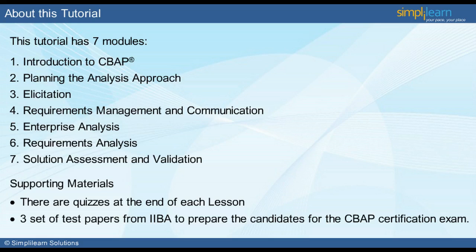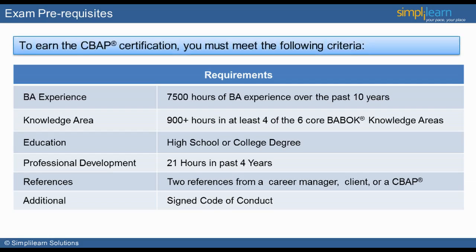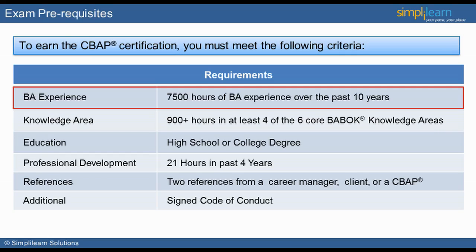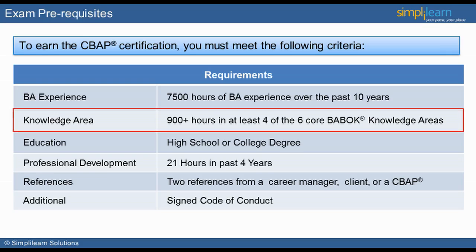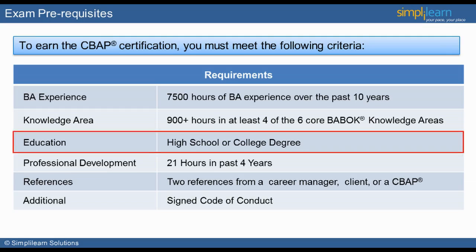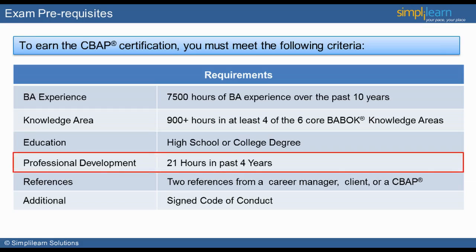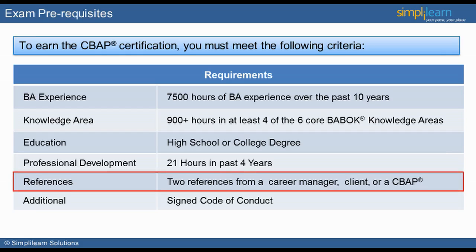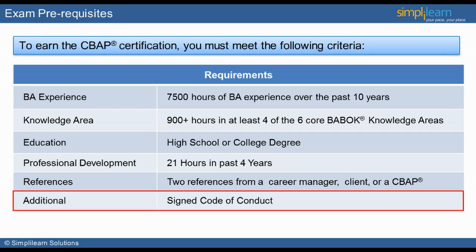In order to get the CBAP certification, there are certain requirements to be met by the professional. The business analyst should have at least 7,500 hours of relevant experience in the BA field spanning over the last 10 years. The individual should also have more than 900 hours in at least four of the six core BABOK knowledge areas. A high school or college degree is the minimum educational qualification required. The individual should have 21 hours of professional development in the last four years. Additionally, they would require two references from a career manager, client, or a CBAP. Finally, the individual would require a signed code of conduct.